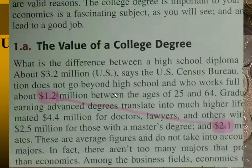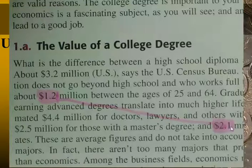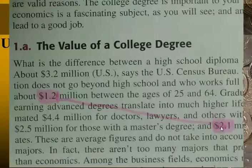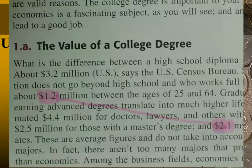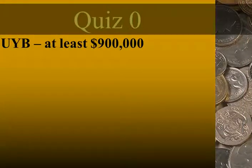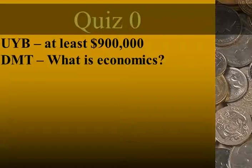They showed you numbers about the value of a college degree: one point two million dollars for anyone who goes just to high school. A college degree assumes you went to high school, so all the benefits of that high school degree come from the high school degree — not the college degree. The basic college degree gets you two point one million dollars in lifetime earnings, so the difference — point nine million dollars, or nine hundred thousand dollars — is the answer. We say 'at least' nine hundred thousand because you could make more with higher degrees.